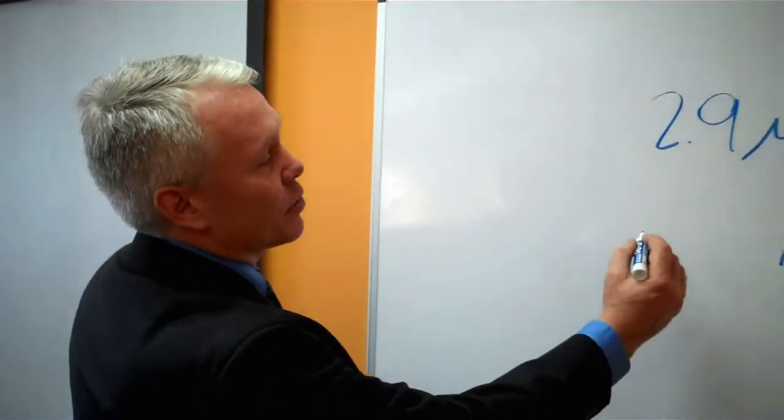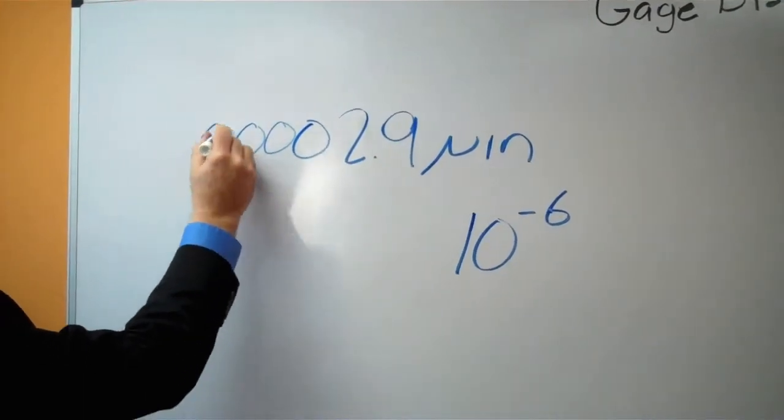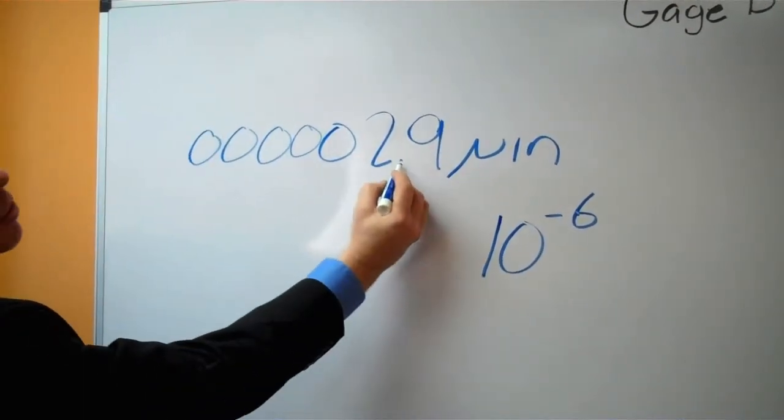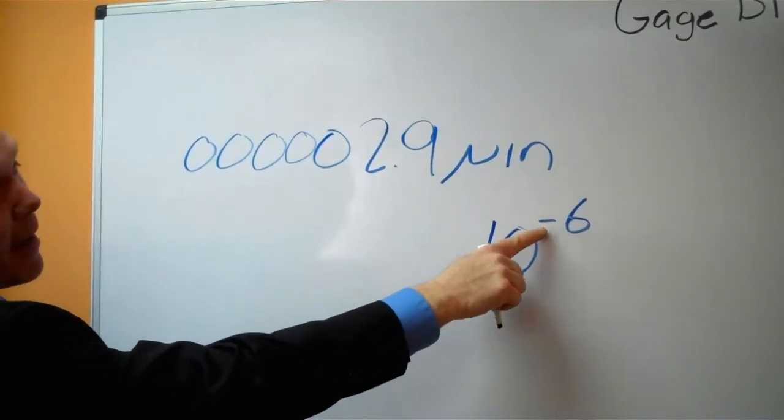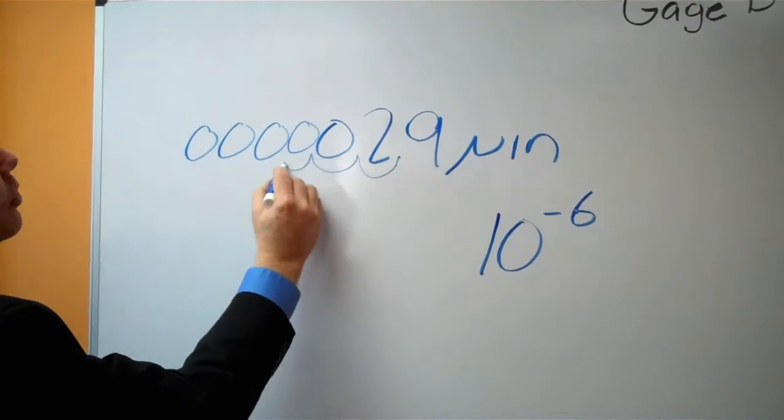So for example, in the case of 2.9, we can put a bunch of zeros in front of the number, and we simply move the decimal place a magnitude of minus 6, 1, 2, 3, 4, 5, 6,